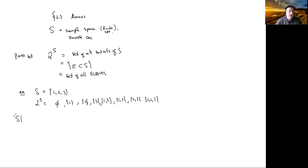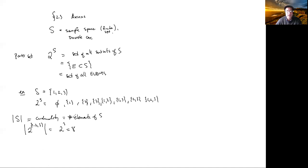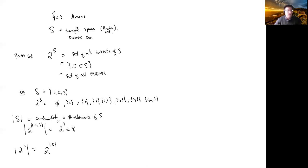Now, if S is a set, we put two straight lines around it — that's called the cardinality, which is just the number of elements in S. So we just saw that the cardinality of the power set of {1,2,3} is 2 cubed, which is 8. In fact, it's true in general that if we take the cardinality of 2^S for any finite set S, that's the same as 2 to the power of the cardinality of S. That's not very hard to check, and we'll hopefully see this later today.